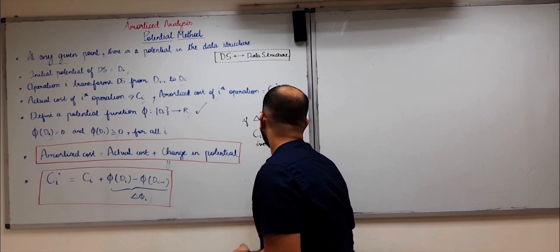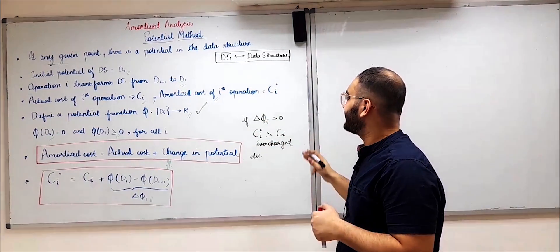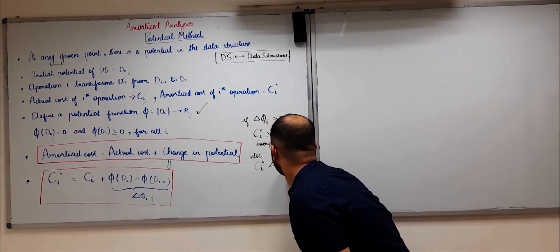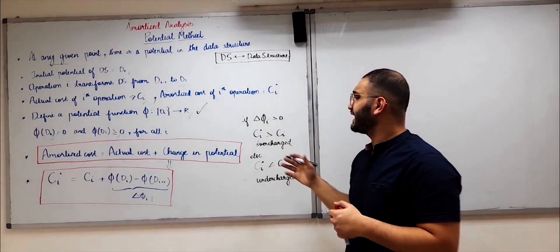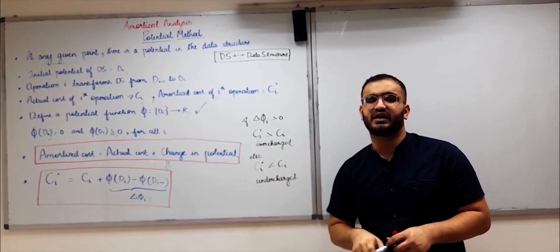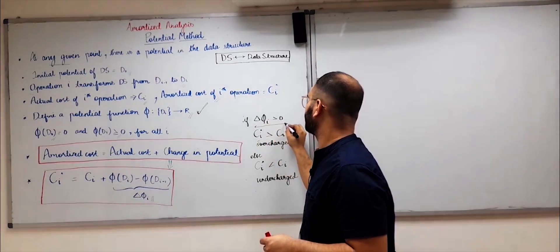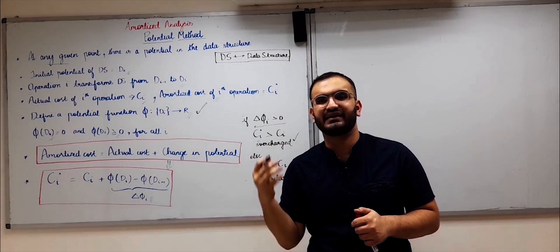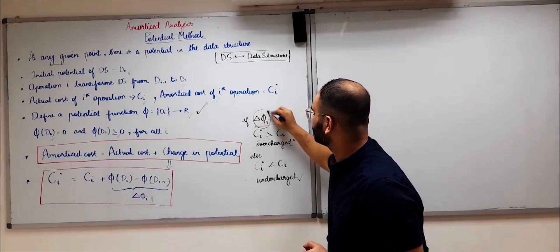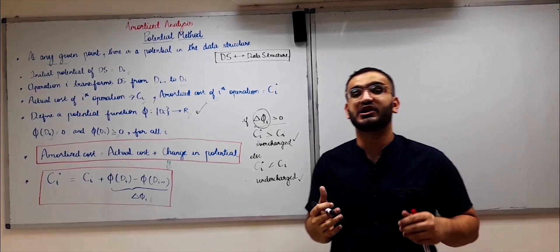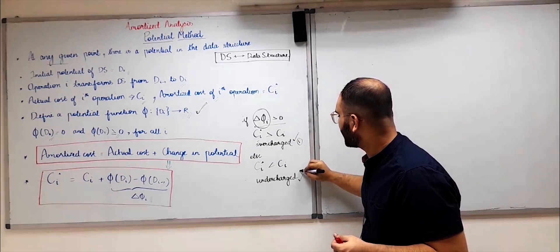In the other case, if delta Φ_i is less than 0, that implies c_i_cap is less than c_i — this is undercharging, where you have underestimated the time complexity by assigning a lesser amortized cost than the actual cost. In the case of overcharging, the potential of your data structure will increase, and this potential you can use later on to perform other, costlier operations. Whereas in the case of undercharging, the potential decreases and the potential accumulated until now gets used up to perform the current operation.